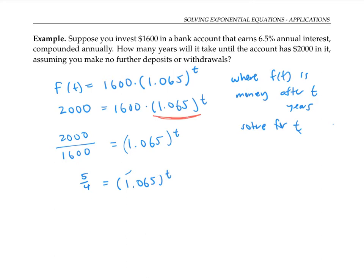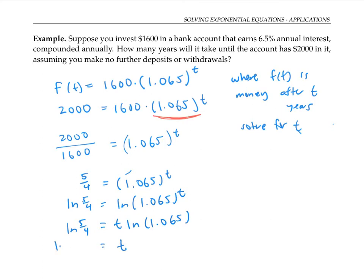I'll use log base e this time. So I have ln(5/4) equals ln of 1.065 to the t. By the power rule for logs, on the right side I can bring that exponent t down and multiply it in front. Now it's easy to isolate t just by dividing both sides by ln(1.065). Typing that into my calculator, I get that t is approximately 3.54 years.